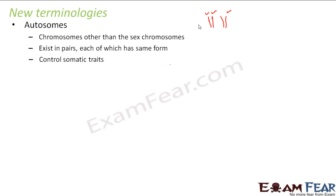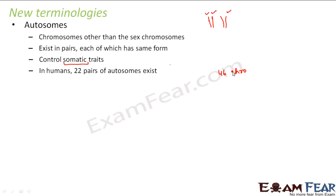Autosomes control the somatic traits — the word somatic means something related to the body. In humans, 22 pairs of autosomes exist. Out of the total 46 chromosomes in humans, 44 are autosomes, and since they exist in pairs, that gives us 22 pairs of autosomes.